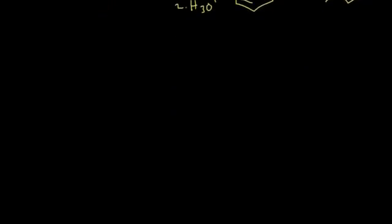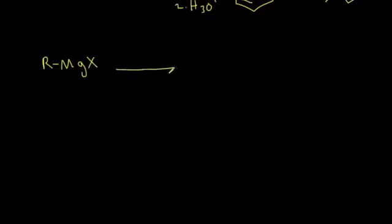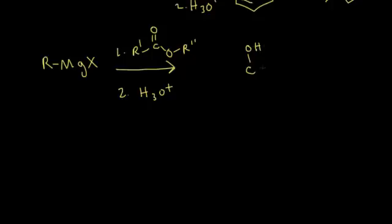Now let's look at the general reaction for a Grignard reagent with esters. There's my Grignard reagent, and I'm going to react it with an ester — I'll call the ester groups R prime and R double prime to distinguish them from the R group on our Grignard reagent. The second step adds H₃O⁺. In this situation, the Grignard reagent is going to add on twice to our carbonyl carbon. The carbon attached to the OH in our product will have the R prime group and the R group from the Grignard reagent added on twice.